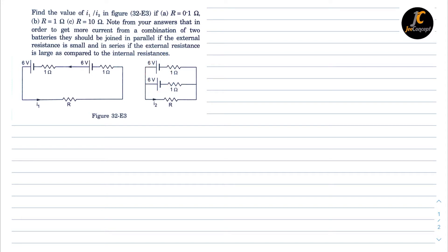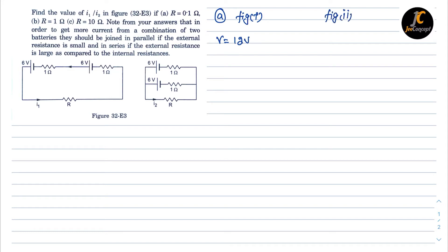For the first part, the total EMF is e1 plus e2. In the second part (parallel), the voltage remains 6 volts only. For figure 1 the net voltage is 12 volts, whereas for figure 2 the net voltage is 6 volts. The internal resistances of 1 ohm, 1 ohm, and 0.1 ohm are connected in series.